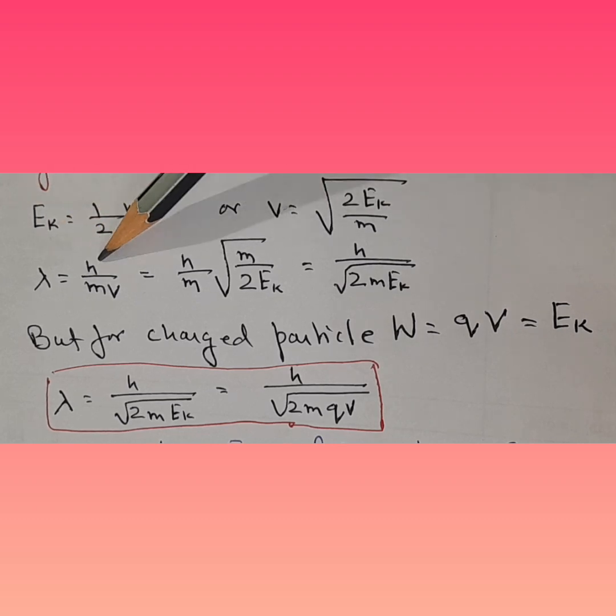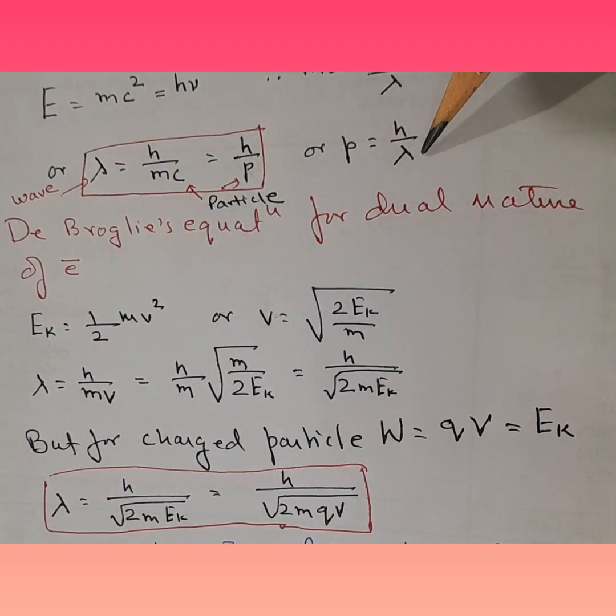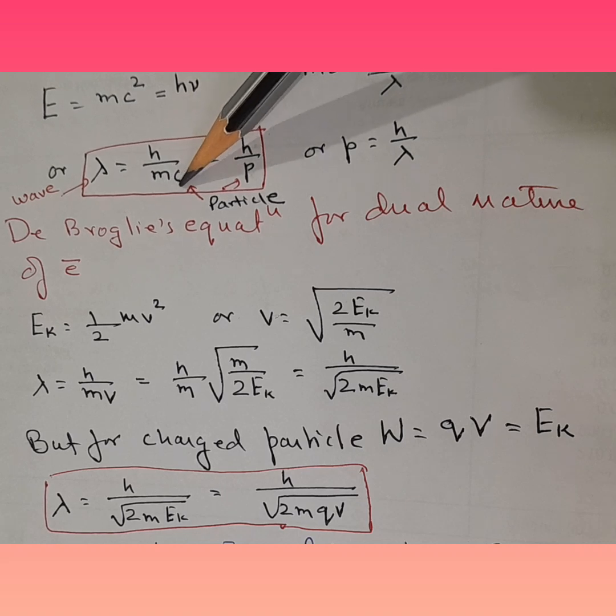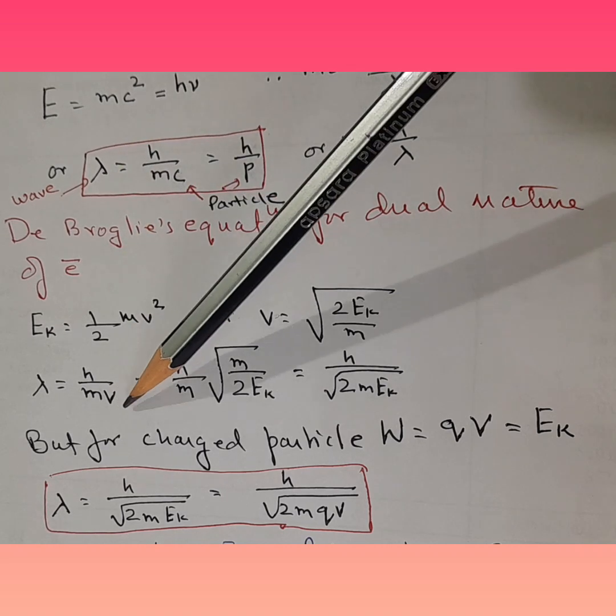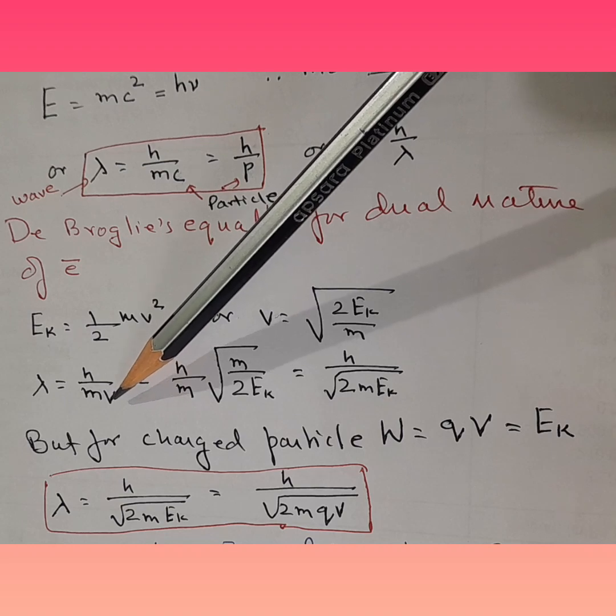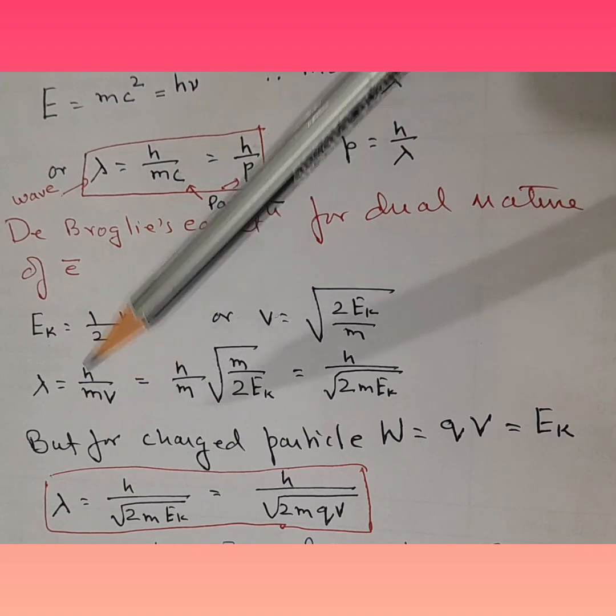Lambda is equal to h over mv. Now we saw, we just now saw that it was h over p, h over mc, where c is velocity of light. So instead of velocity of light, we make it velocity of particle. So, lambda is equal to h over mv.